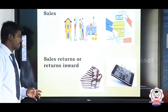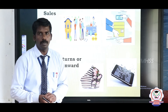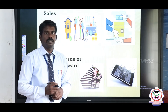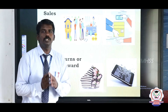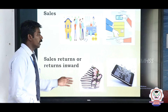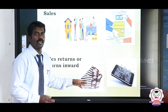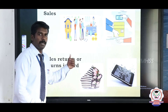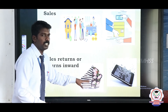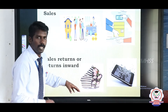Next, sales return or return inwards. The company sold goods to the consumer, but sometimes the consumer returns the goods to the company. Why do consumers return goods? When the goods are damaged, broken, or mismatched products are sent to the consumer by the company, the consumer does not accept damaged, mismatched, or broken goods — that is why they return the goods to the company.